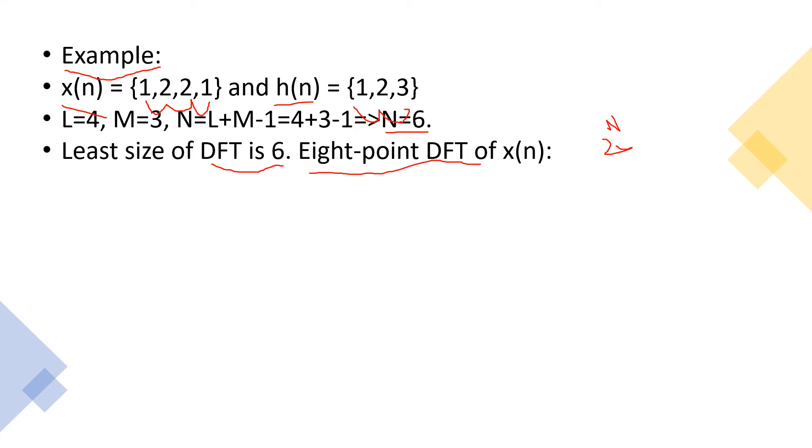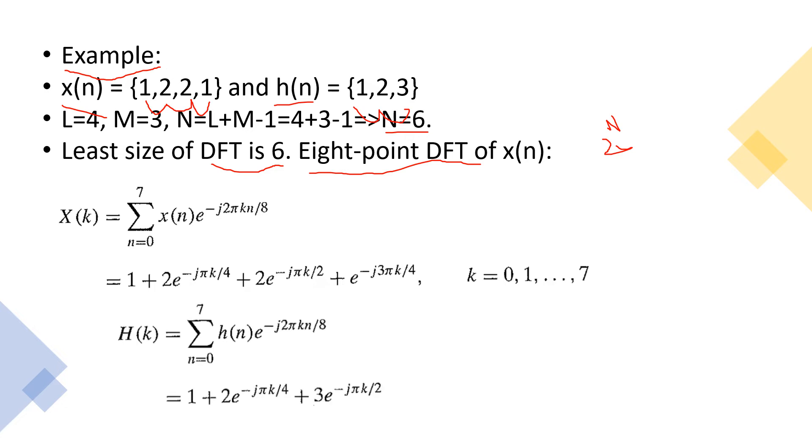So let's calculate 8-point DFT of x of n. x of k equal to summation n equal to 0 to 7 x of n into e to the power of minus j 2 pi kn by 8. Similarly, when we perform 8-point DFT of impulse response h of n, it is given as h of k equal to summation n equal to 0 to 7 h of n e to the power of minus j 2 pi kn by 8.